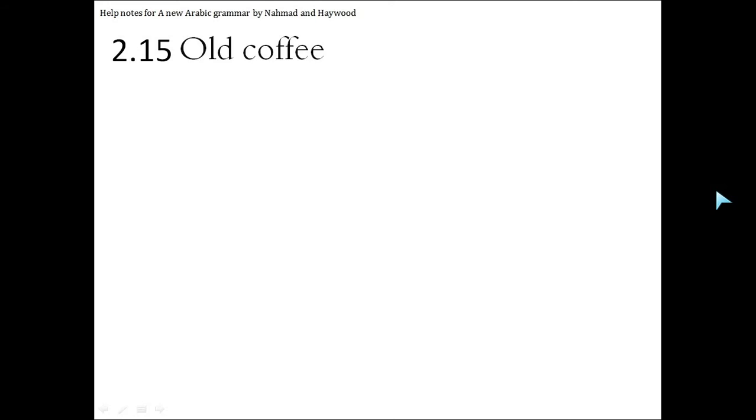Old coffee. The first thing we're going to do is look at the structures inside old coffee. We find that there is no is, so this is just a collection of two words, one describing the other. In other words, an adjective noun group.